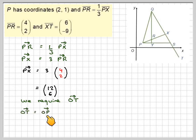So OT will be OP, PX, and XT. Now we know OP because we've got the coordinates of P, which is 2, 1. So that as a vector, OP will be 2, 1.